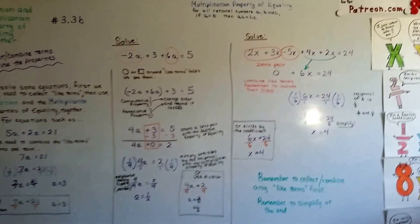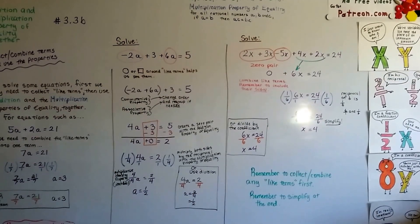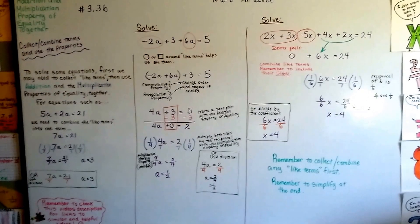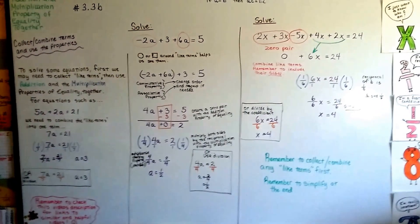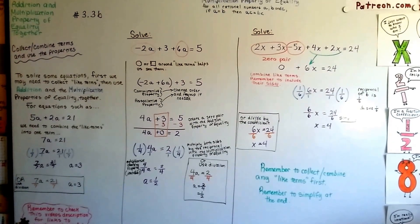We're going to talk about using the addition and multiplication property of equality together when there's parentheses in the equation. Sorry about that glare on my board there in the corner. So, I hope I'll see you there. Keep trying. We're going to get through this together. Bye.